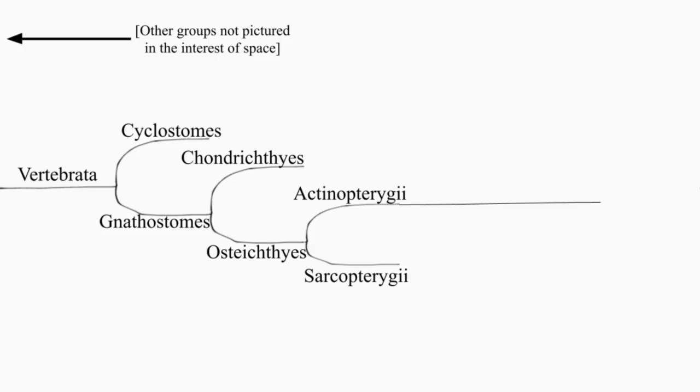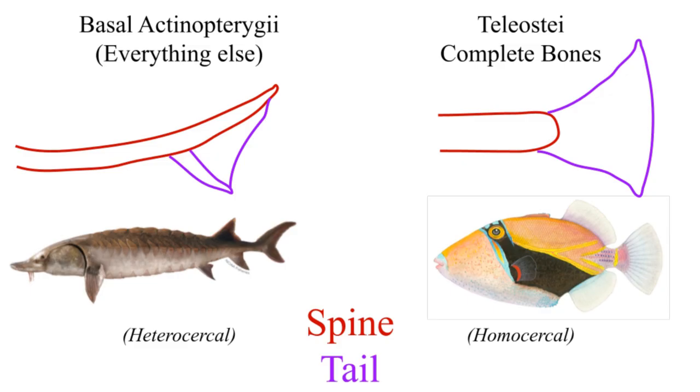Breaking off from actinopterygii, we have, in order, the sail branches, who can breathe air but don't like to, the cartilage bones, whose intestines are tied up in a knot, and the whole bones, who have a really weird-looking skull, finally ending in the complete bones, who have a tail that's symmetrical.